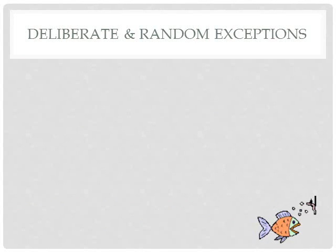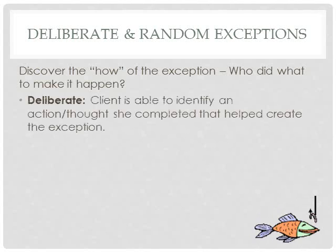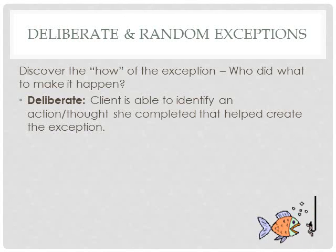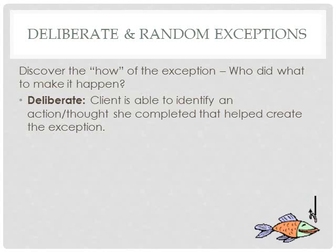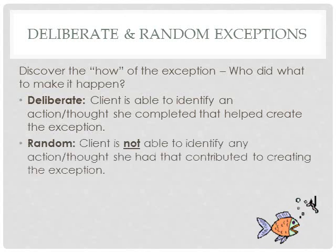There are two types of exceptions: deliberate and random. When looking for exceptions, we want to know the how — who did what to make it happen. Deliberate exceptions are when your client says, 'Yes, there was a moment two weeks ago when I was so frustrated and close to losing my temper, but I thought about it, paused, went outside, took a walk, and got some exercise to clear my head.' That client can identify their role — they made that choice, took the pause, chose to go take a walk instead. They see themselves as an active part because they did a specific action or thought, or a mix of the two, to make it happen.